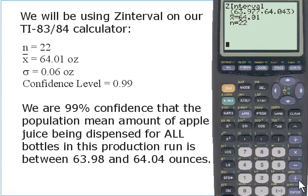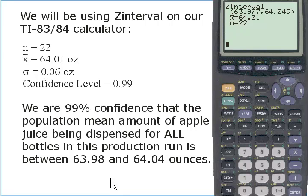Did you notice how close our hypothesized value of 64.05 ounces is to this interval? Based on the evidence from our random sample, the true population mean might be just a little bit less — 64.04 ounces — or as low as 63.98 ounces. Now you have an idea of how far off it actually is. Suppose you want your confidence interval to be more narrow — in other words, a smaller margin of error.